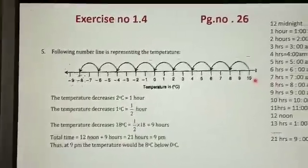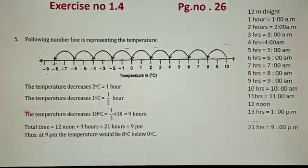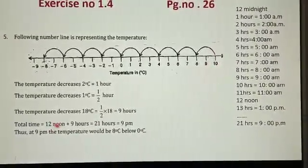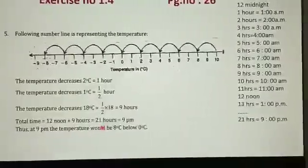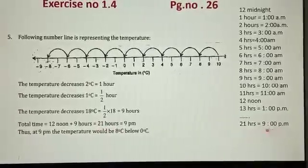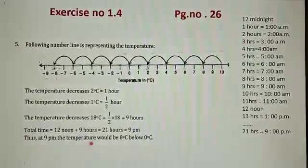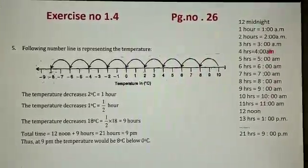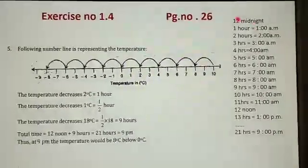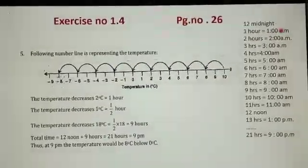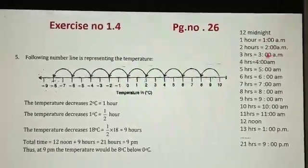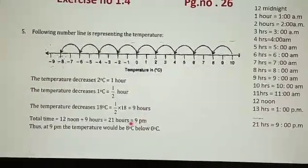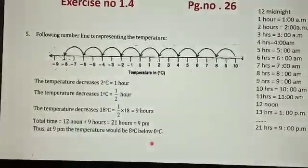At 12 noon the temperature was 10 degrees Celsius. So 12 plus 9. At 12 noon the temperature was 10 degrees Celsius, which was at 12 noon. So 12 plus 9 equals 21 hours. 21 hours equals 9 PM. At 9 PM the temperature would be 8 degrees Celsius below 0. Do you remember children the conversion of 12-hour clock into 24-hour clock? Like 21 hours equals 9 PM. So at 9 PM the temperature will be minus 8 degrees Celsius, or 8 degrees Celsius below 0.